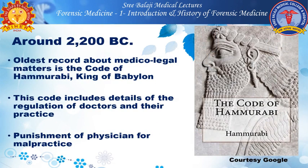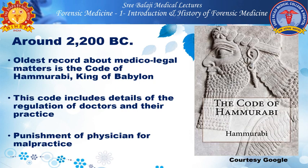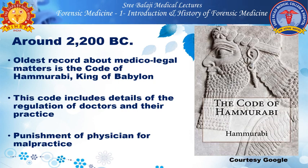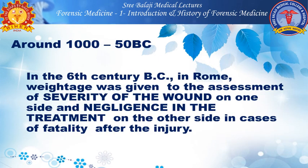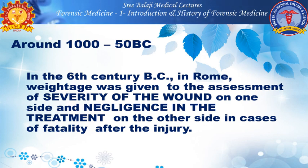Around 2200 BC, the oldest record about medical legal matters is the Code of Hammurabi — he was the king of Babylon. This code includes details of the regulation of doctors and punishment of physicians for malpractice or negligence. Around 1000 to 50 BC, in the 6th century BC in Rome, weightage was given to the assessment of the severity of wounds and negligence to treatment in cases of fatality after injury.